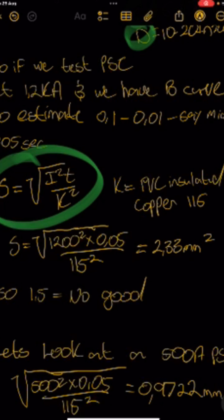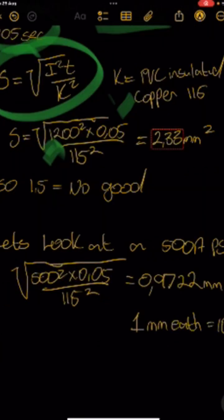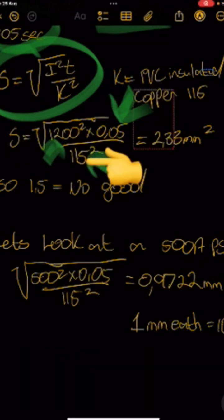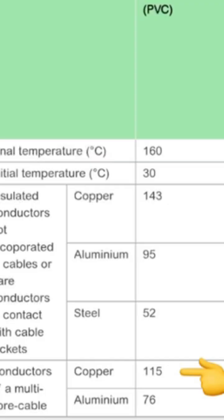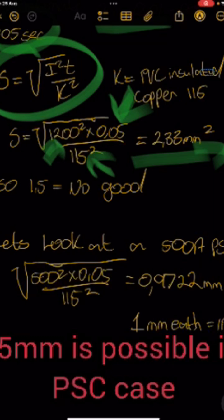When we take our PSC, we look at typical values. We've got a PSC of 1.2 kA and a B-spec curve, which means it's going to trip in this time with that amount of current — so 0.01 to 0.1 seconds. There's our 1,200 amp PSC. Over here is our trip time, and over here is our K rating for PVC insulated copper. When we calculate it, it comes out at 2.3 millimeters squared required for this installation.